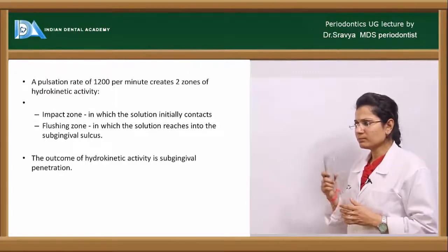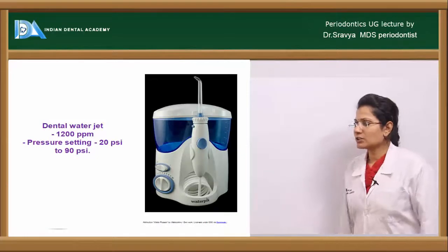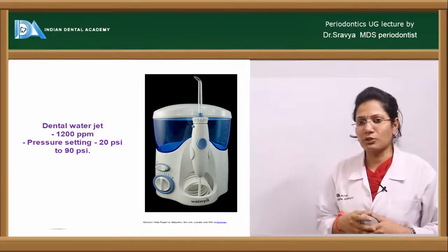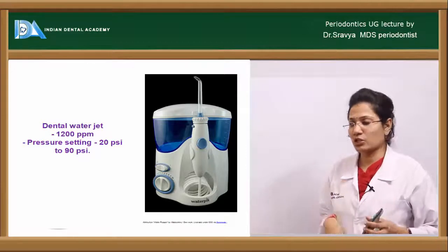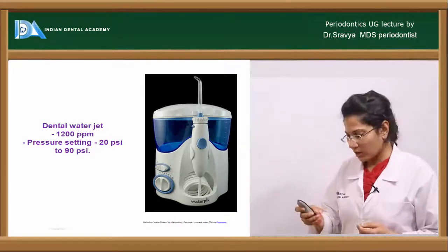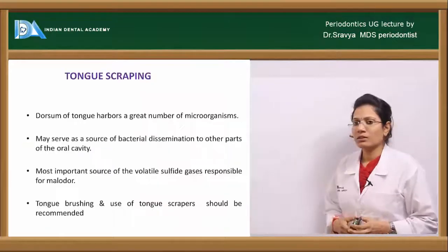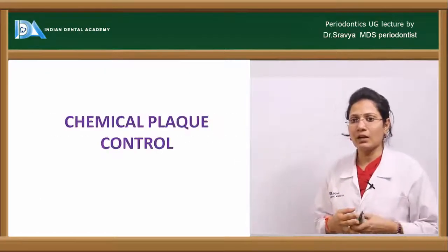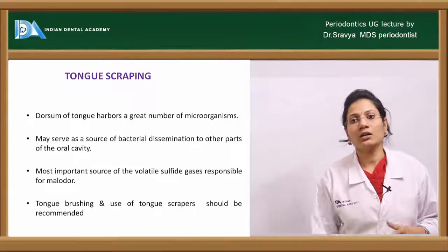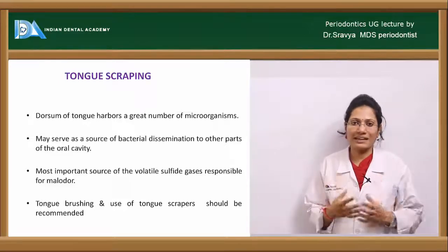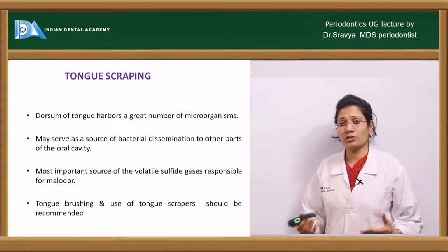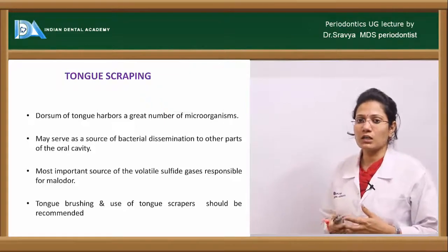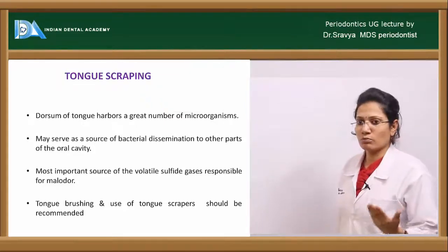The outcome of hydrokinetic energy is subgingival penetration. Site-specific tips can be placed inside the subgingival area for irrigation, while jet tips are used only for supragingival irrigation. For mechanical plaque control, cleaning the tongue is also important, as the tongue's papillae create a good ecological niche for microorganisms. Tongue cleaners and tongue scrapers are used to remove deposits from the tongue.